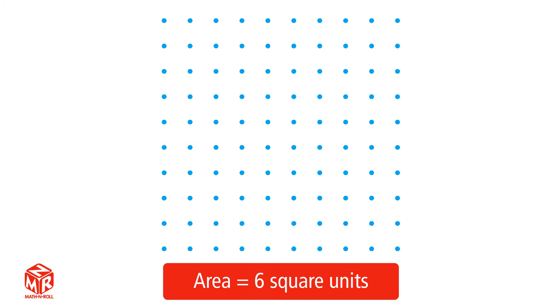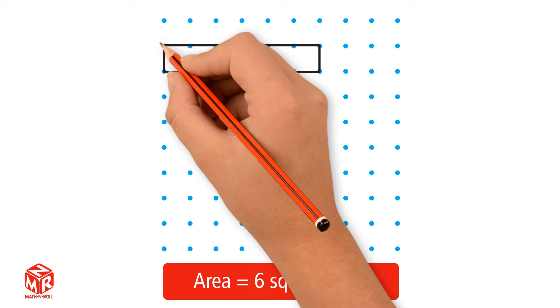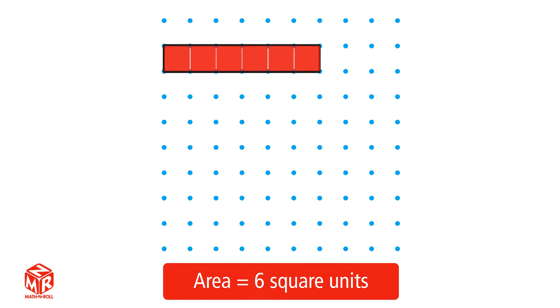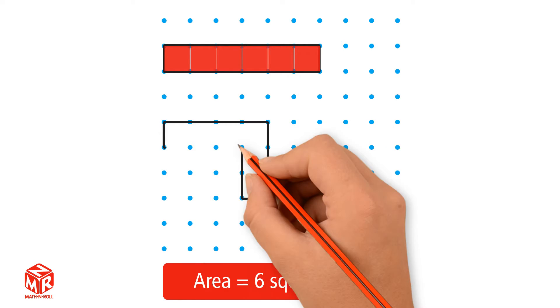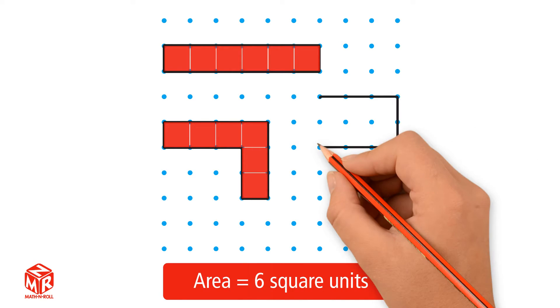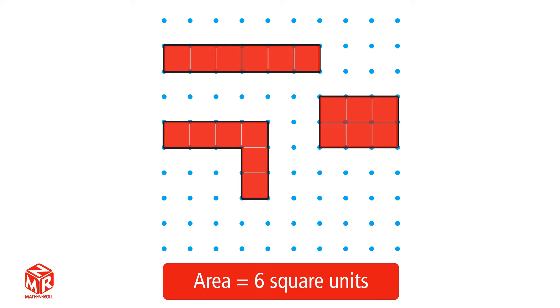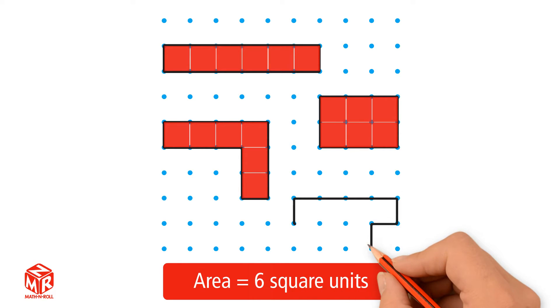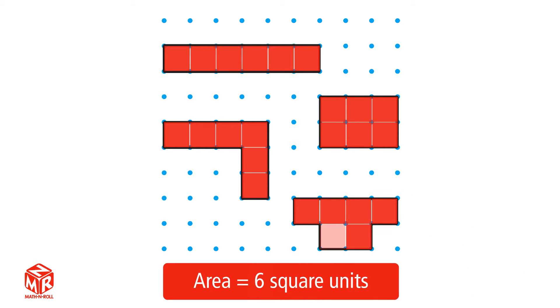Different shapes can have the same area. Using this geoboard, let's make several figures whose area is 6 square units. As you can see, we have different figures with the same area.